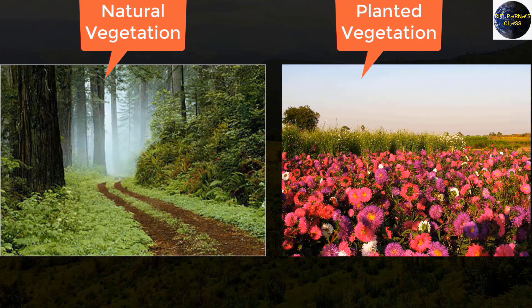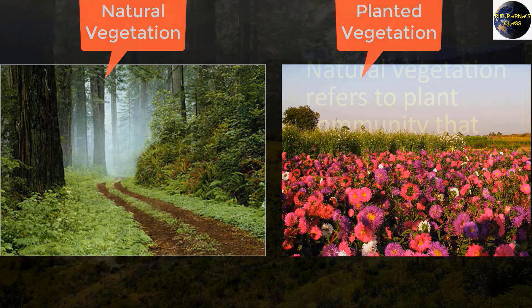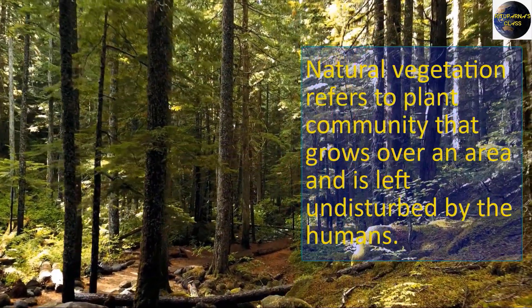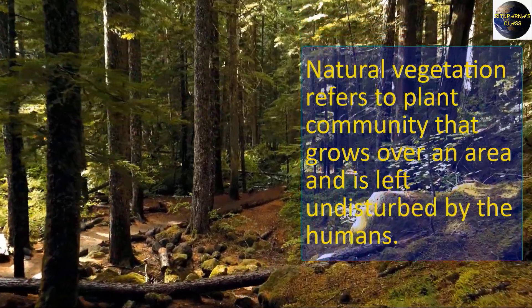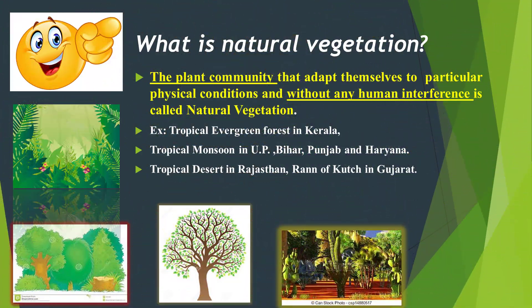The same variety may be found growing wild in the forest under natural conditions, and the same tree may be planted in your garden under human supervision. Natural vegetation refers to a plant community that has been left undisturbed over a long period of time. The plant community that adapts itself to particular physical conditions without any human interference is called natural vegetation.